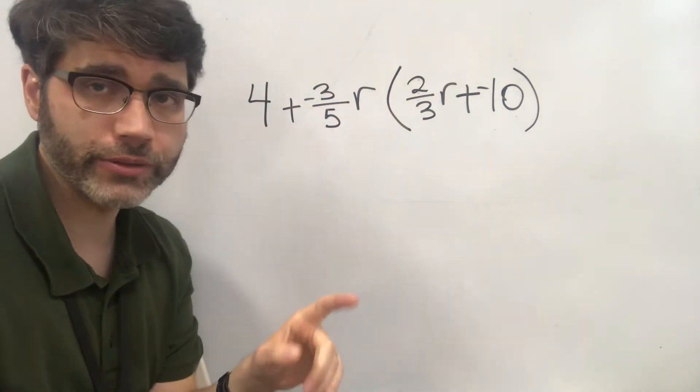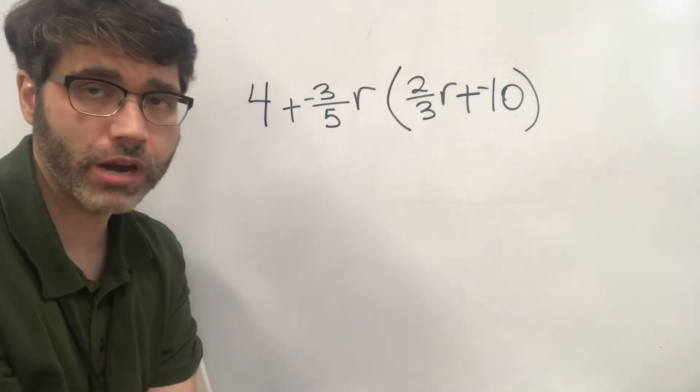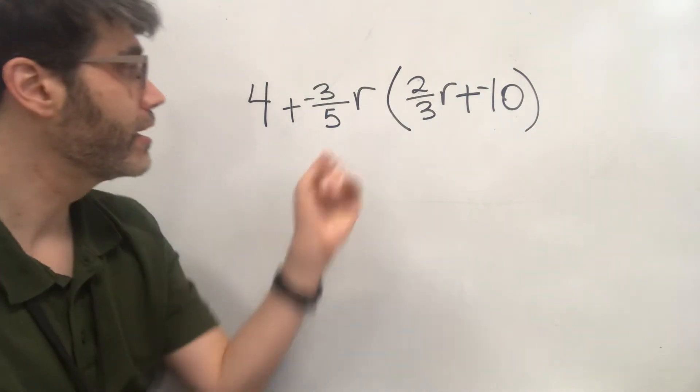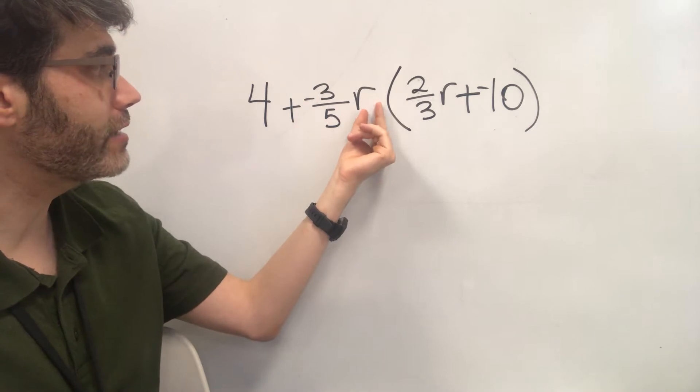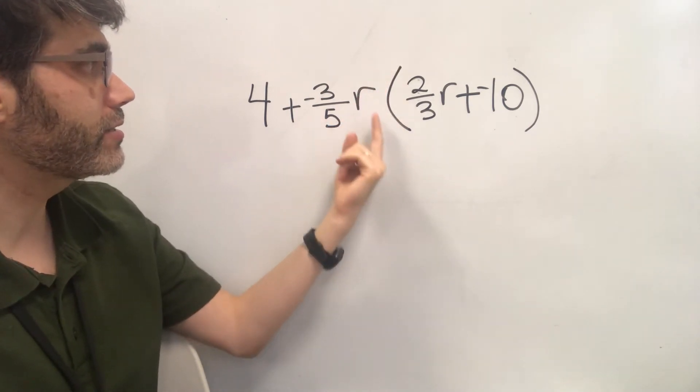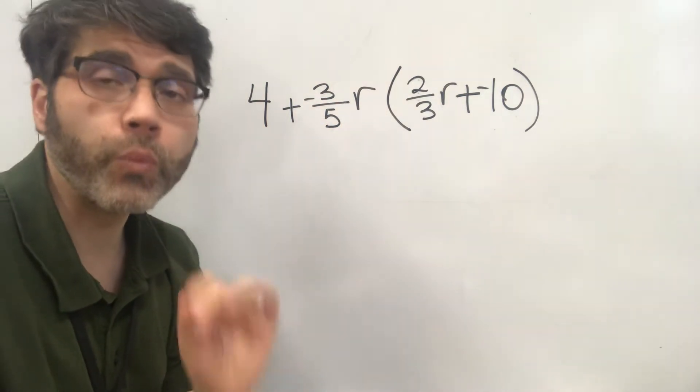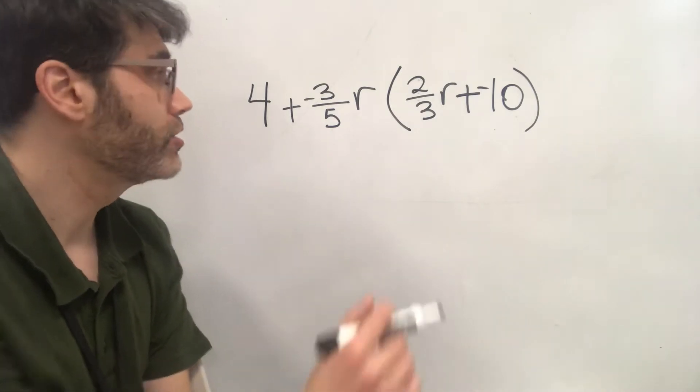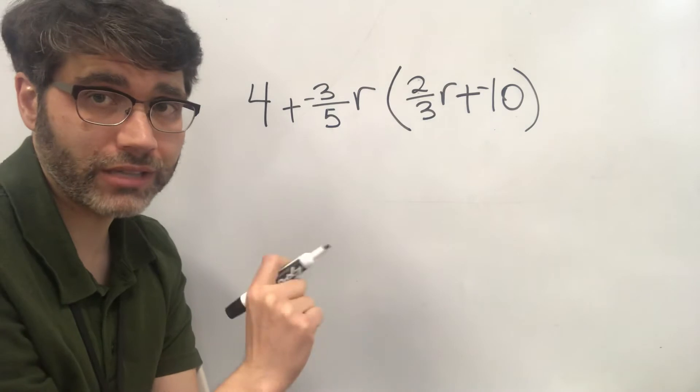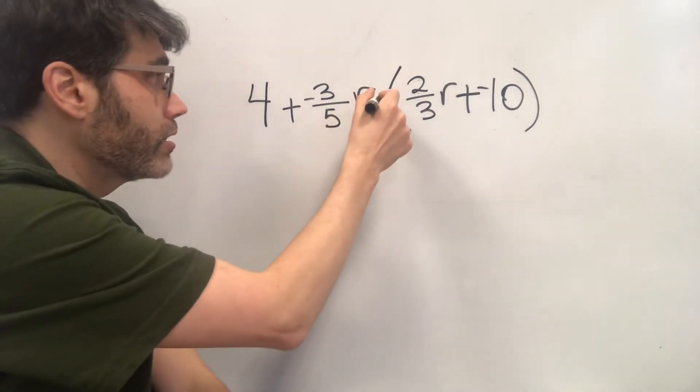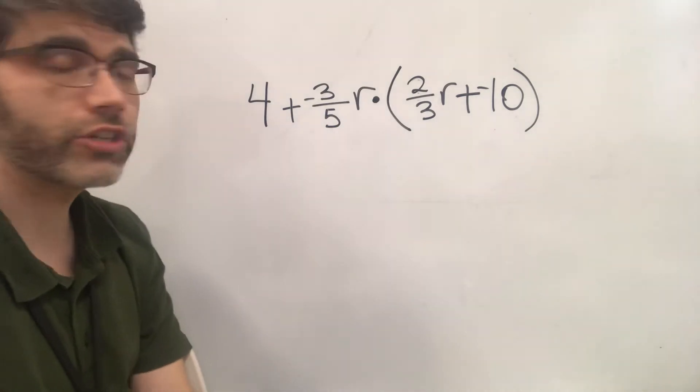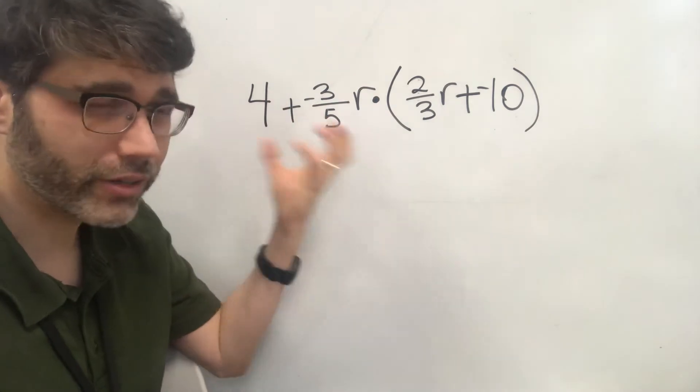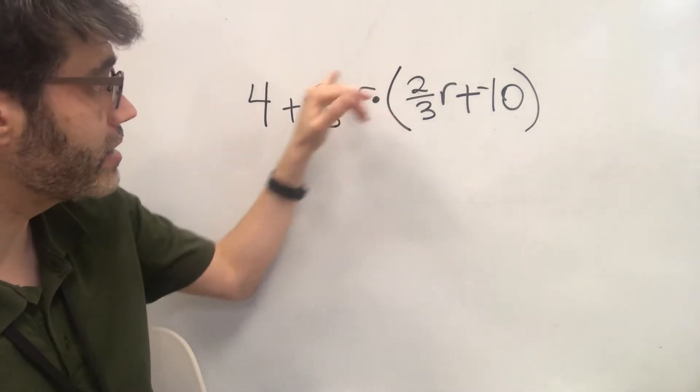The other thing that we do, it's kind of like a checklist. Before you start any of these problems, the checklist includes making all the subtractions into plus negatives, as well as if you don't see anything between this term and the parentheses, there's nothing here. So what is assumed always is that it's a multiplication. So I highly recommend that the second thing that you're going to do on your checklist is to put a little multiplication dot in there, just so it visualizes the importance of being able to multiply this times everything inside.